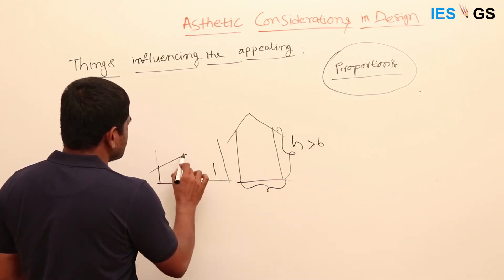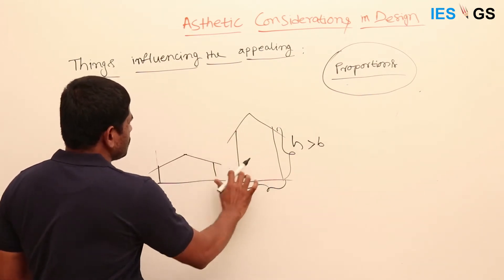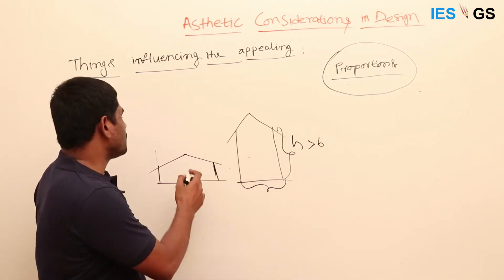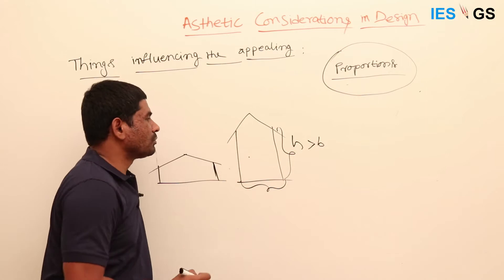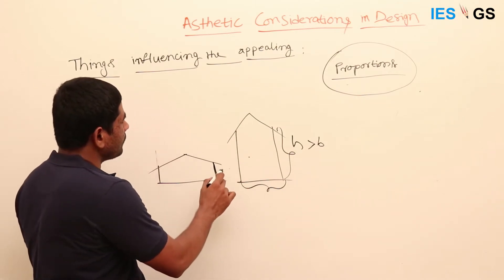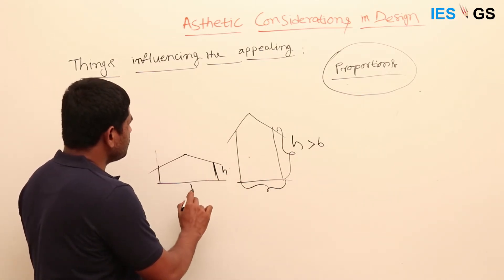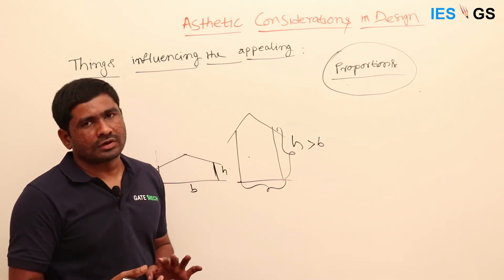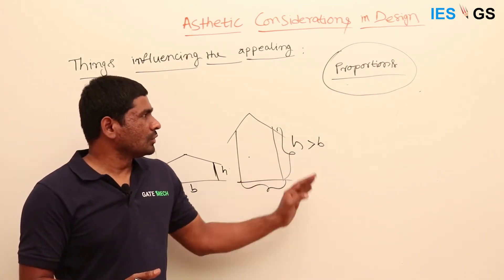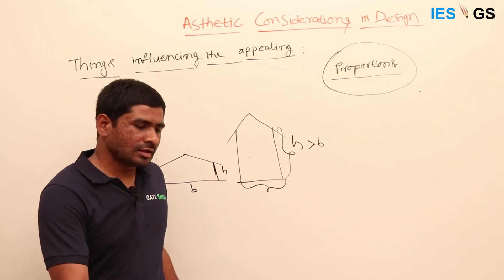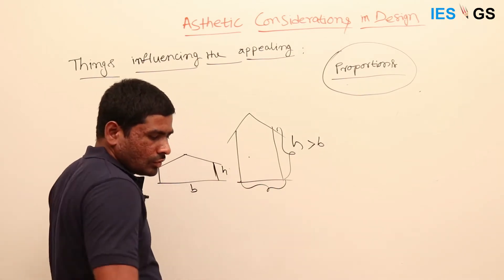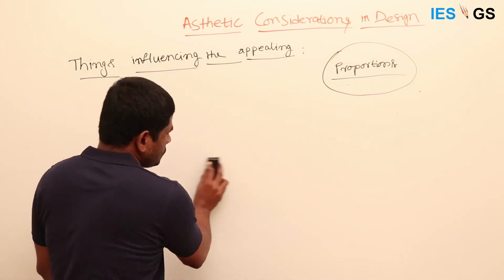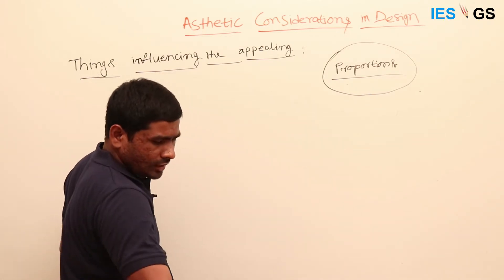If I represent a home with a flat shape like this, it's not really looking good compared to the taller one. This type of home looks better because the chosen height and base are not in appropriate proportion. That is how proportion always plays a vital role in deciding the aesthetic effect.